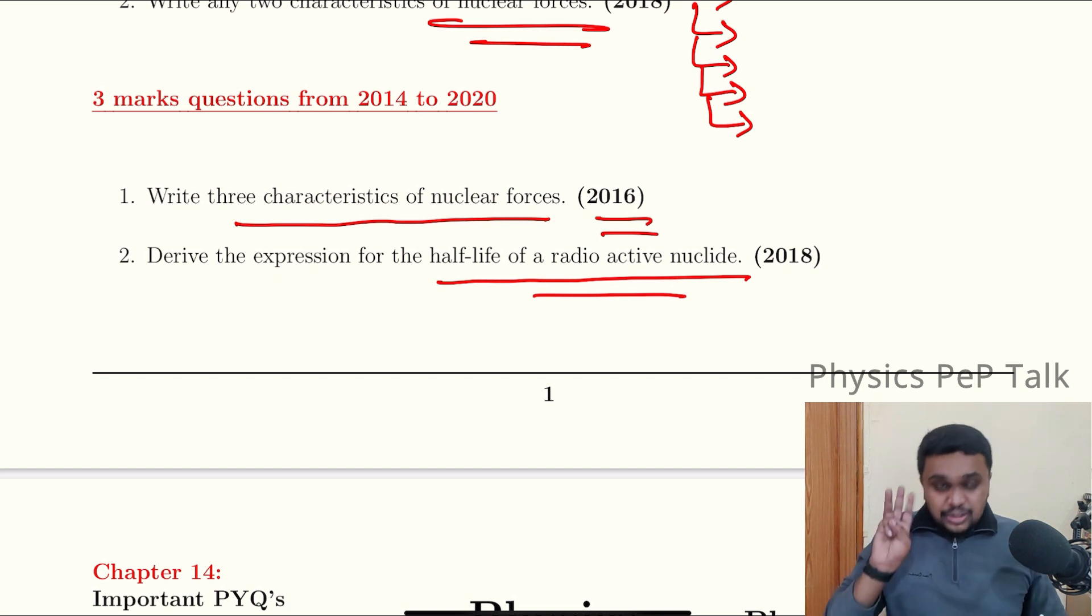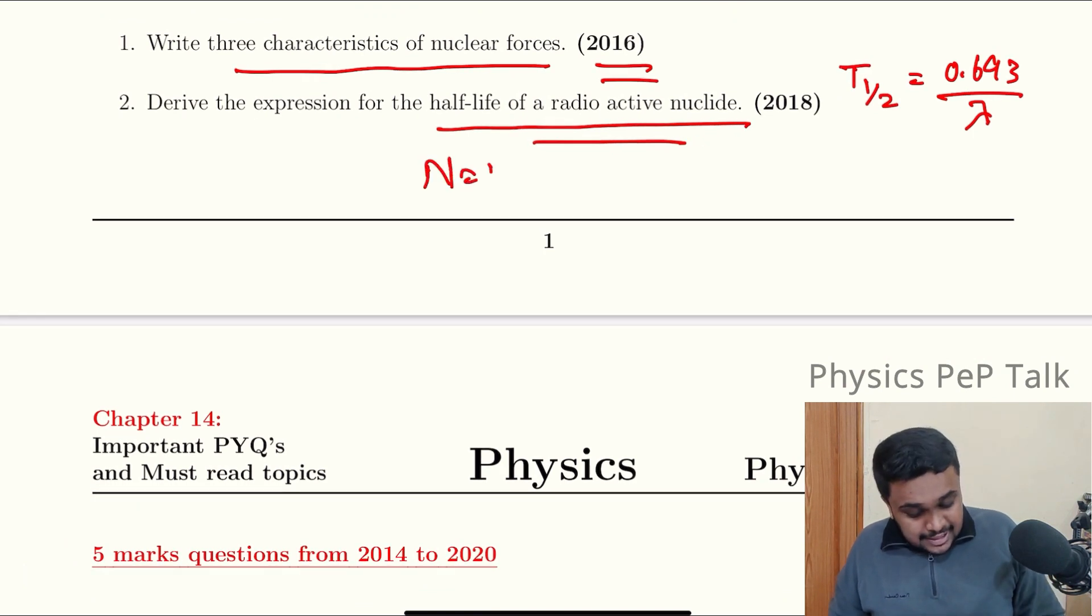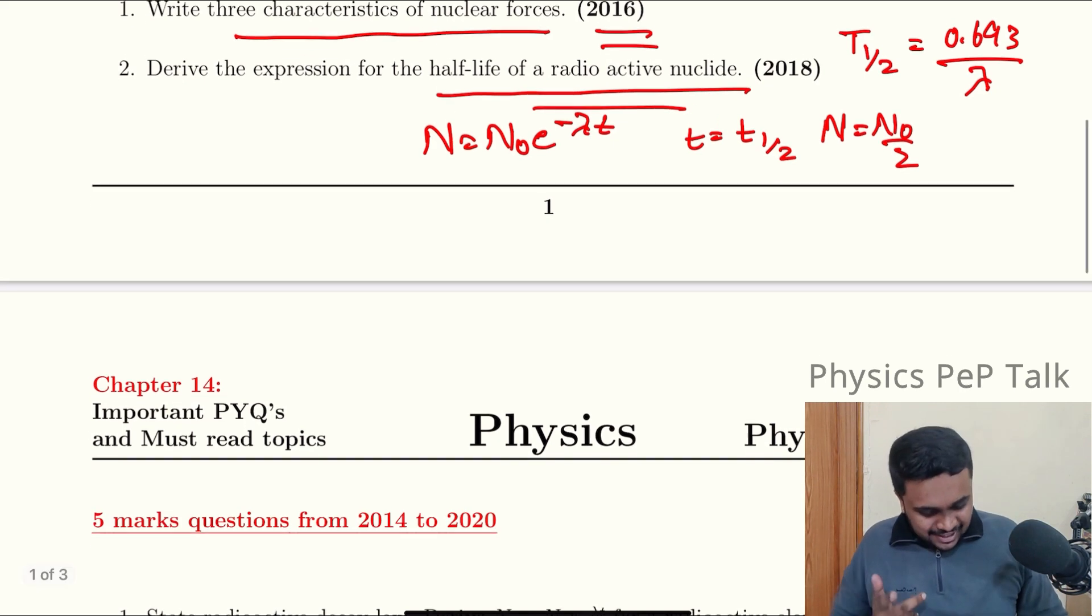Three marks: Derive T half equals 0.693 by lambda, where lambda is the decay constant. Start with N equals N naught e power minus lambda t. When t equals t half, N equals N naught by 2. Taking log on both sides, log to the base e, multiply with 2.303. Simple derivation, you can do this.